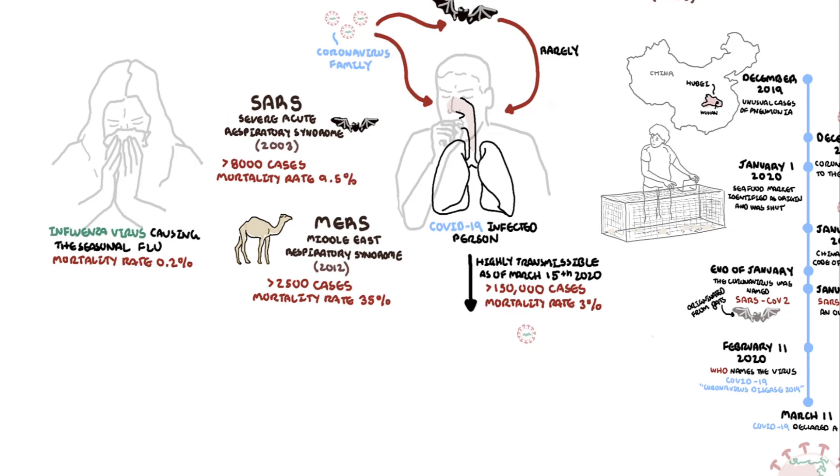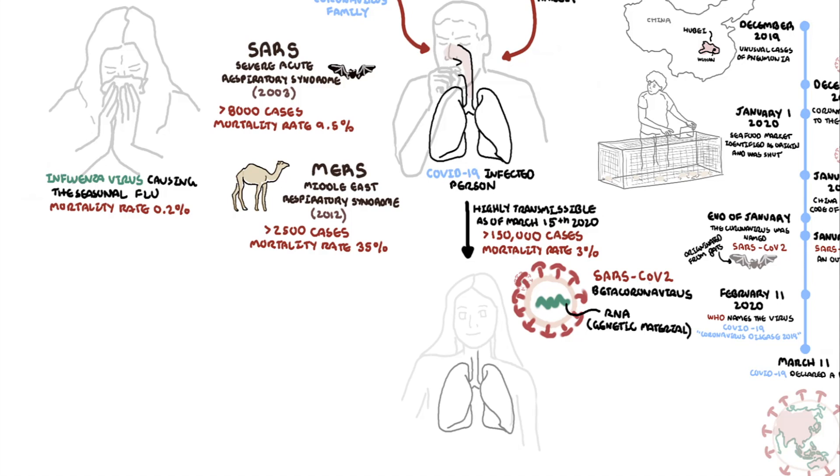COVID-19 is caused by SARS-CoV-2, a beta coronavirus. It is composed of a single-stranded ribonucleic acid, RNA. The virus targets and infects the respiratory system and is transmitted by contact, droplets, and fomites from another infected person who is symptomatic or even asymptomatic.